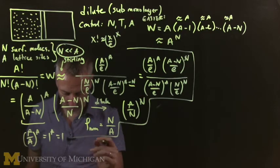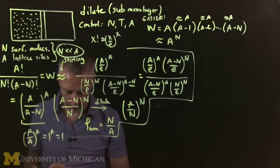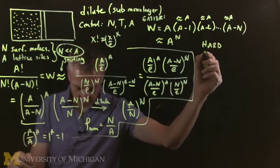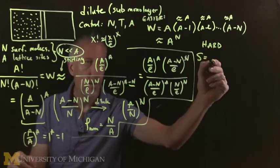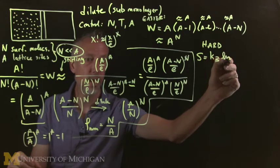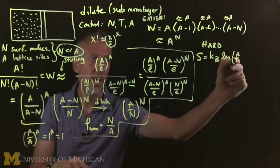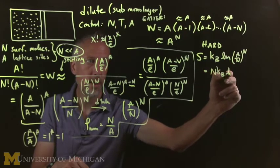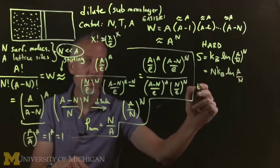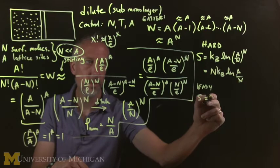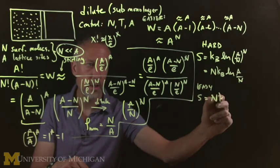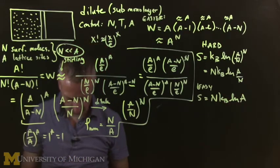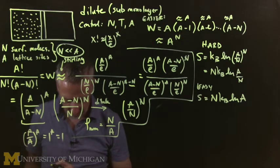For the hard case, entropy S = k·ln[(A/N)^N] = N·k·ln(A/N). For the easy case, S = N·k·ln(A). Those are the two ways of calculating the entropy using slightly different approximations.